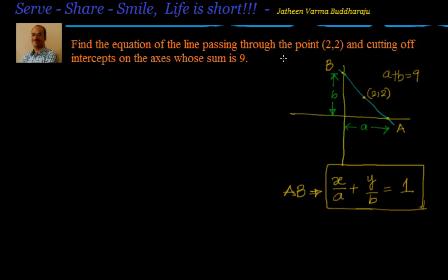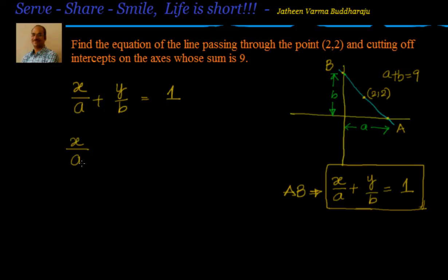Now we have to find the straight line. Once I see the intercepts, I will prefer to use the intercept form, also called the double intercept form. The form is x/a + y/b = 1. This is the equation of the straight line having 'a' as the x-intercept and 'b' as the y-intercept. Now, since a + b = 9, I can write b as 9 minus a. So the equation becomes x/a + y/(9-a) = 1.